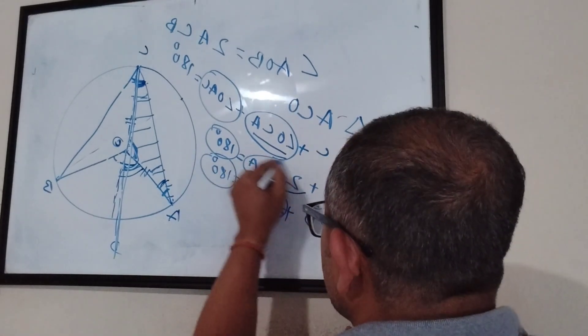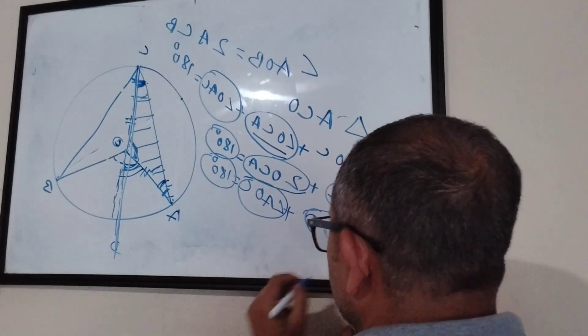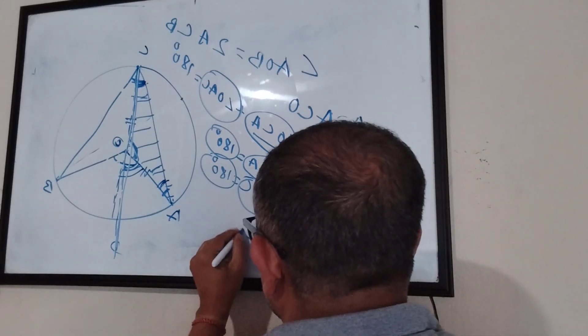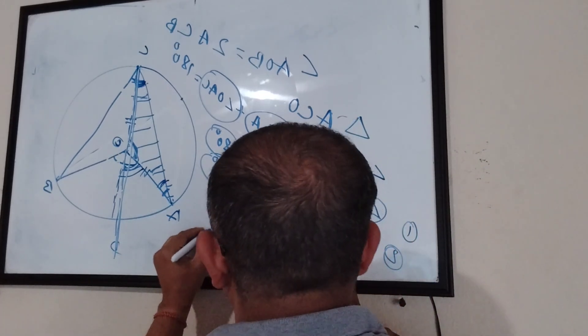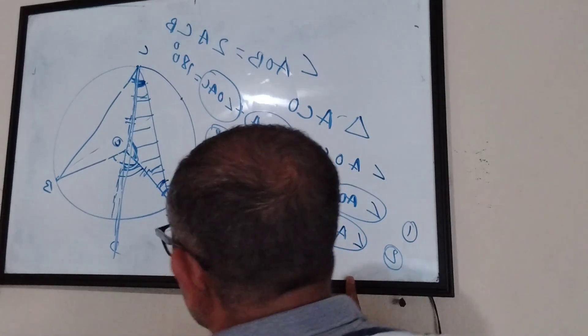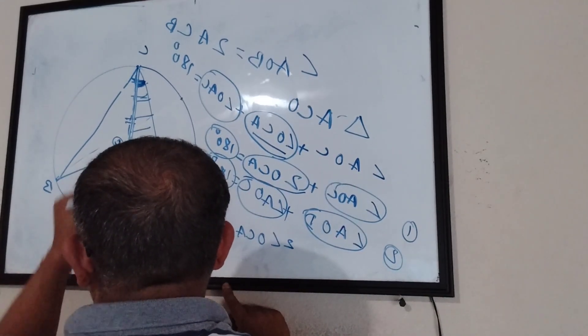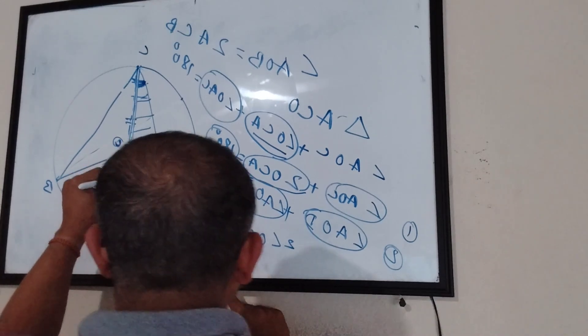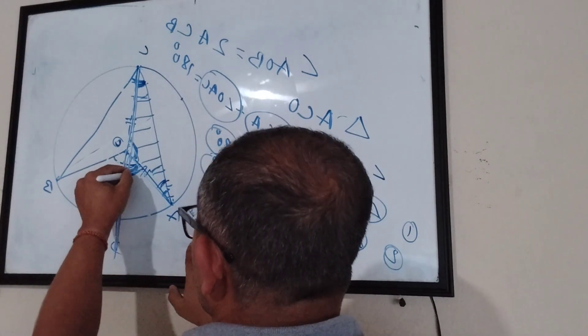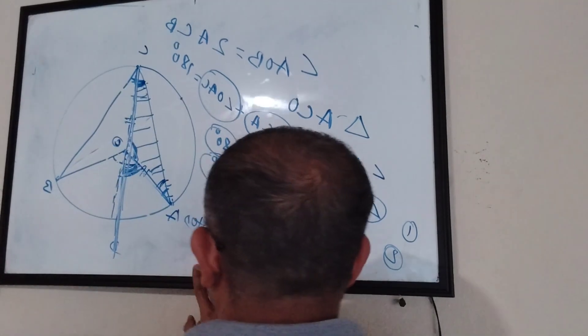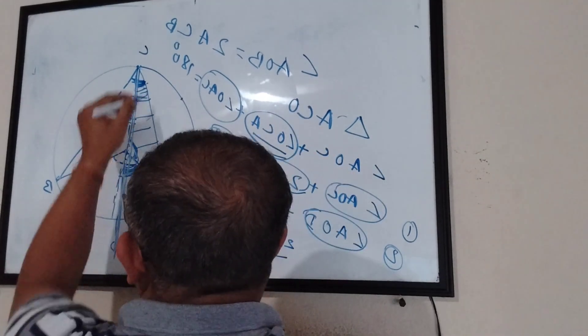Two times angle OCA equals angle AOD. So two times angle OCA equals angle AOD. Now what is that angle AOD? This portion, this part, this angle AOD is two times angle OCA. So this angle is two times this angle.